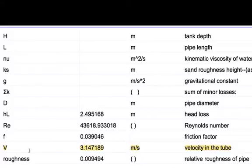The velocity in the pipe is 3.15 meters per second. The Reynolds number, 44,000, so it's definitely in the turbulent range. The head loss is 2.5 meters. The friction factor is 0.039. Hope you enjoyed this solution.